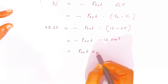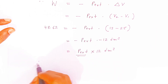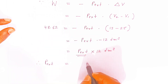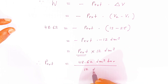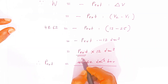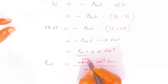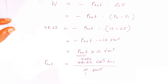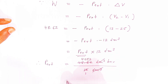So P external × 12 dm³ = 48.624 dm³·bar. To calculate P external, divide 48.624 by 12. The dm³ units cancel, and 48.62 divided by 12 gives 4.052. So the external pressure is 4.052 bar.